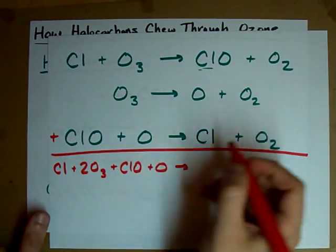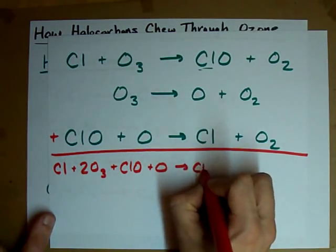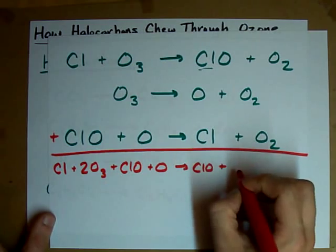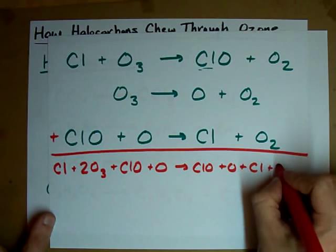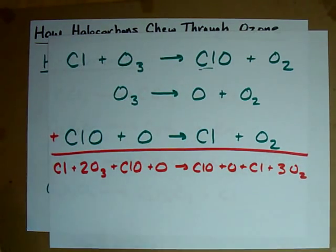So, on the right, we end up with a ClO, an O, a Cl, and three of these O2 molecules.